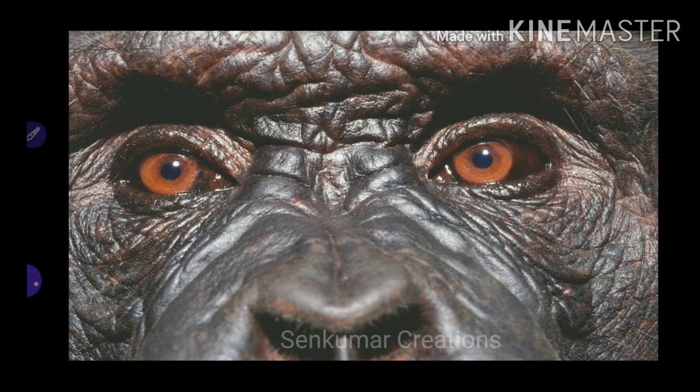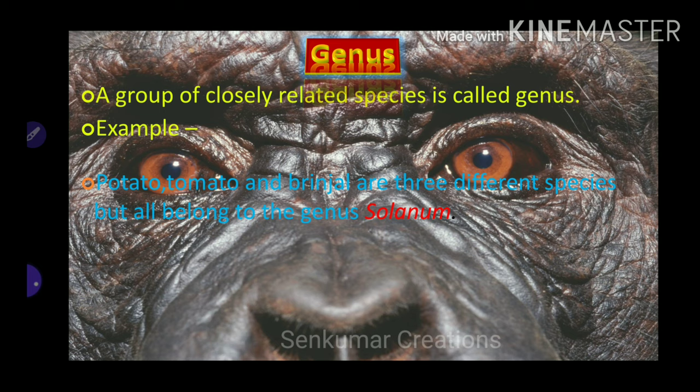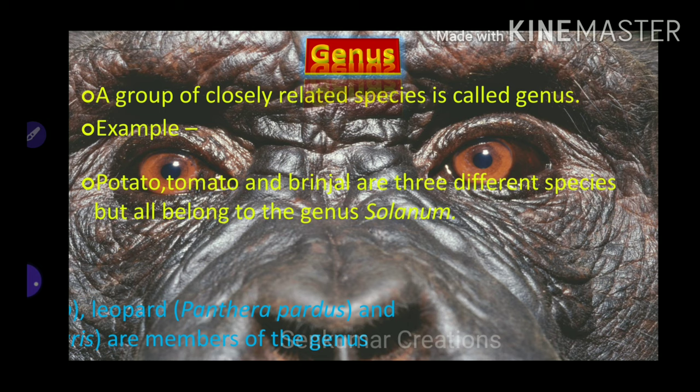A group of closely related species is called a genus. Example: potato, tomato, and brinjal are three different species but all belong to the genus Solanum. These are different species but they belong to the same genus, Solanum.